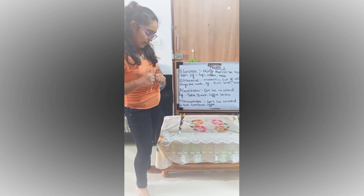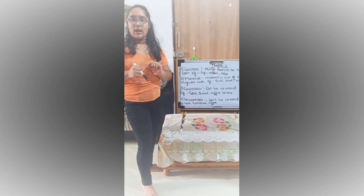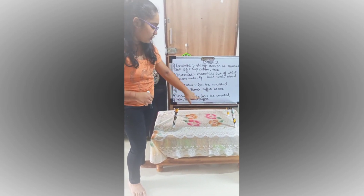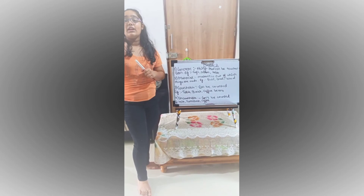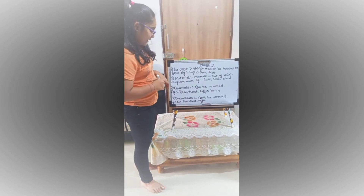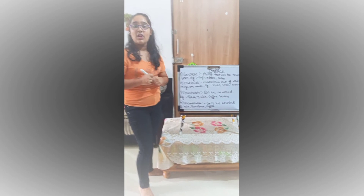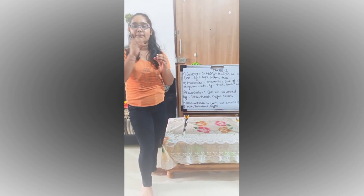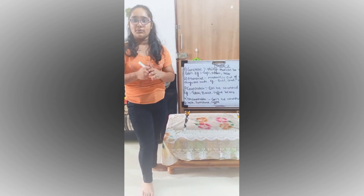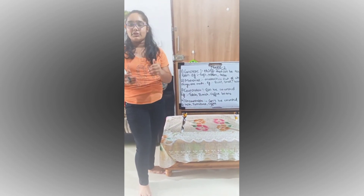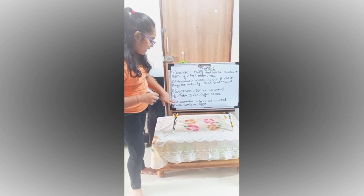Then we have uncountable nouns — things which cannot be counted. For example, milk, furniture, coffee — all of these things cannot be counted and therefore they come under uncountable nouns. You might have noticed that in countable nouns I wrote coffee beans, and under uncountable nouns I wrote coffee. Coffee beans refers to the beans which are added in the coffee, so they can be counted. But coffee here refers to the coffee powder we add to milk, which can't be counted — that's why it comes under uncountable nouns.